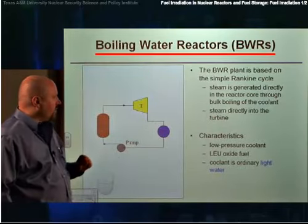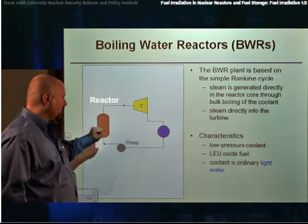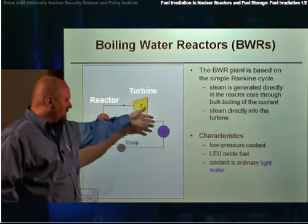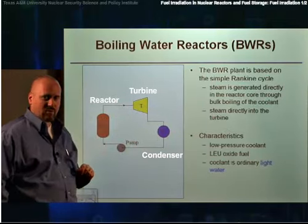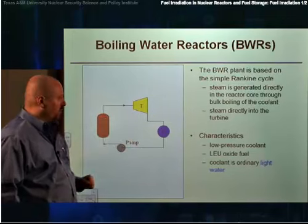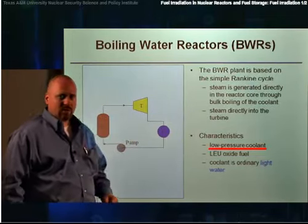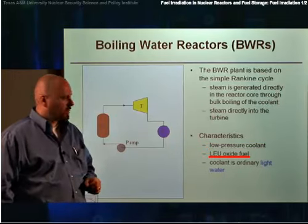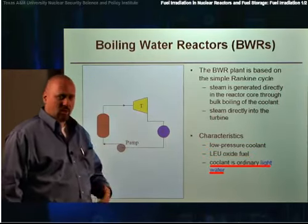The BWR, or boiling water reactor, is a very simple reactor type. The reactor produces steam, that steam then drives a turbine, and the steam then gets condensed in a condenser and pumped back through the reactor. So the thermodynamic loop for it is very simple. This reactor operates off of a low-pressure light water coolant. It has a low-enriched uranium, or LEU, oxide fuel, and the coolant is just ordinary light water.